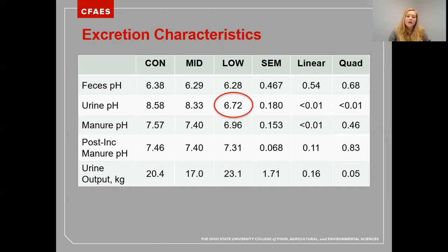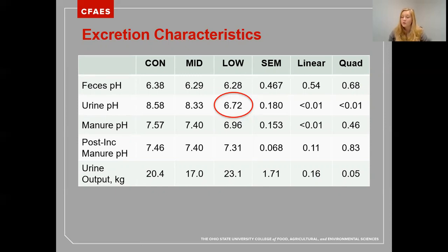Urine output was increased quadratically for control and low. We attributed this to increased fractions of chloride within the diet, which can also increase water intake and urine output, just like sodium and potassium.